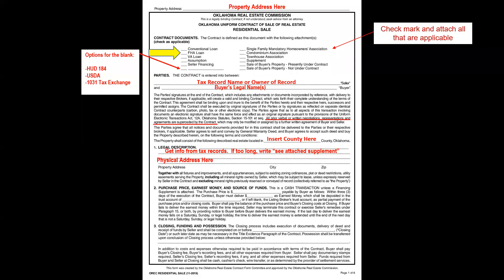The seller will be leaving all fixtures and improvements — anything attached to the property. Note in bold print that this includes mineral rights owned by the seller, unless those mineral rights have been previously reserved.